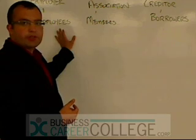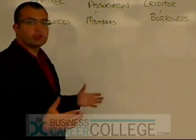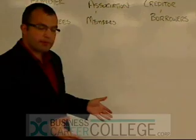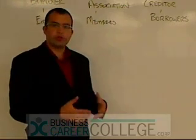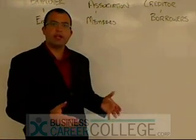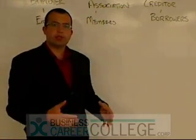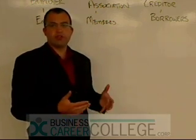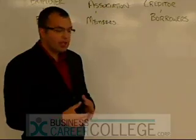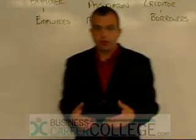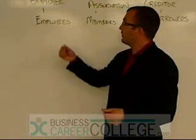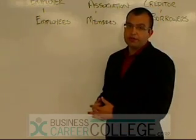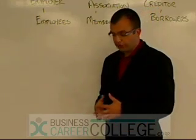The employer-employee relationship is the traditional group insurance arrangement. An employer goes out, acquires a group insurance contract, and then the employees become what we call the plan members — they're the ones who would receive benefits if anything happens. It is usual in a small business for the employer, that is the owner of the business, to also be covered under that group insurance contract.